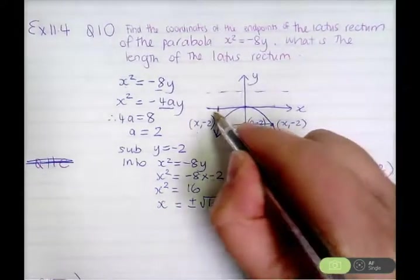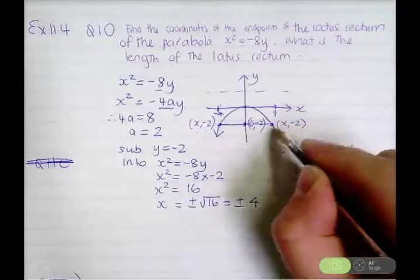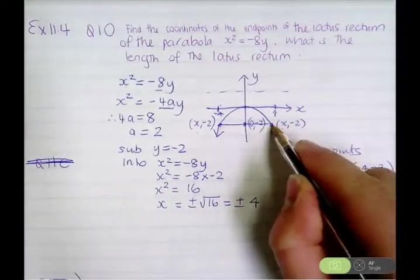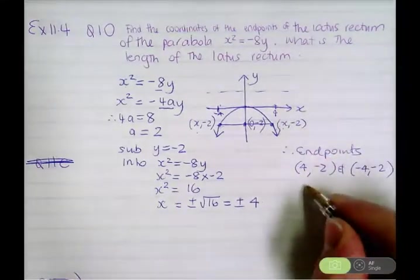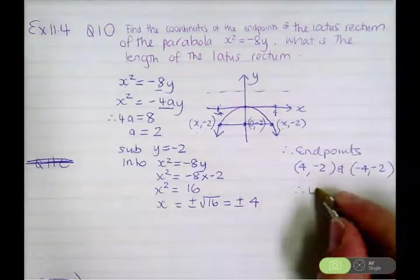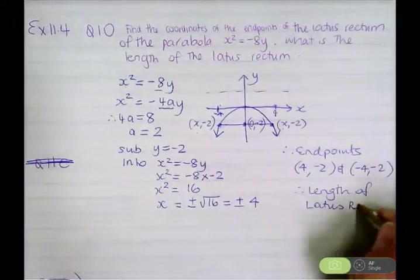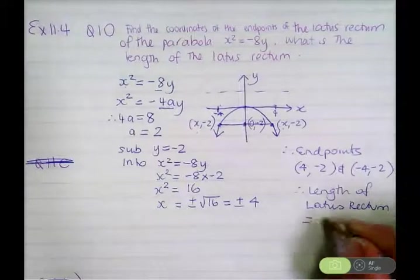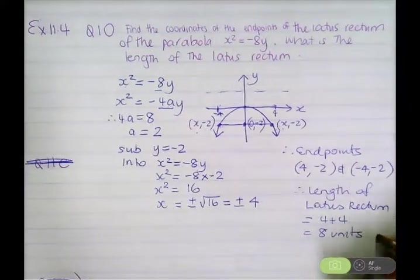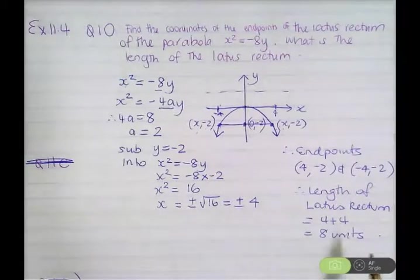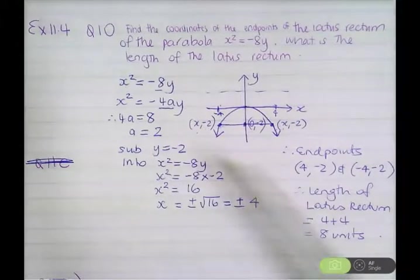The endpoints are (negative 4, negative 2) and (4, negative 2), so the latus rectum goes from negative 4 to positive 4 on the x values. Therefore the length of the latus rectum is 4 plus 4 units, which is 8 units long. We also know the formula that the length of the latus rectum is 4a, and 4 times 2 is 8, so that verifies as well.